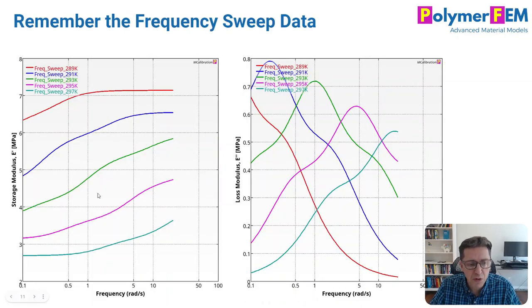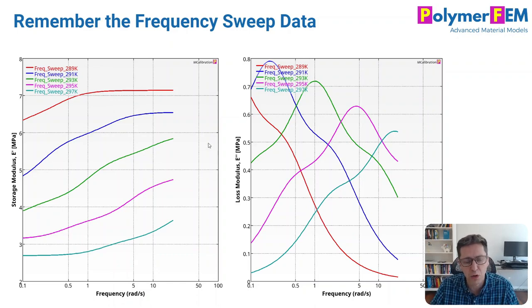So remember when I showed you these before, this is the frequency sweeps at different temperatures. That's what I used to create the master curve. Well, we actually have information what the material model should be, the actual real material model. So I can also, if you wanted to, predict the master curve for each of these temperatures with the real material model, which is the true answer.